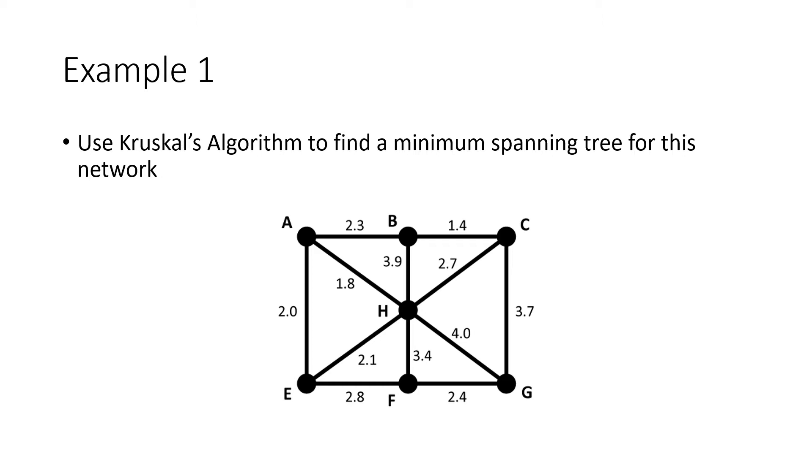For this example we'll use Kruskal's algorithm to find our minimum spanning tree. We start with none of the edges being part of our network and add edges one at a time starting with the cheapest. The lowest number is 1.4 connecting vertex B to vertex C. We're not done yet because we want a network that connects all vertices together.